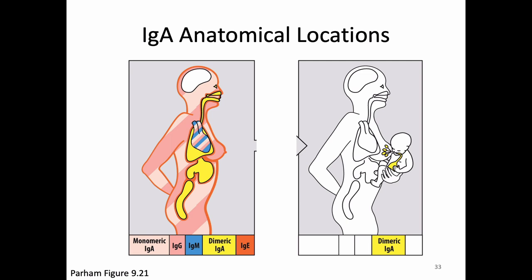IgA is also able to transcytose into breast milk, so if a mother breastfeeds she delivers IgA to the baby. This gives the baby some immune experience against anything the mother has previously been infected with. It's not long-term — we're transferring protein, not cells — so protection lasts perhaps a few weeks, but that's a few weeks the baby wouldn't otherwise have had.